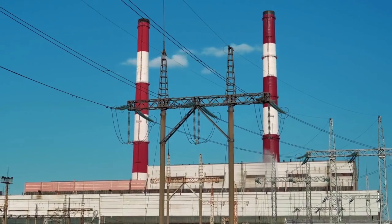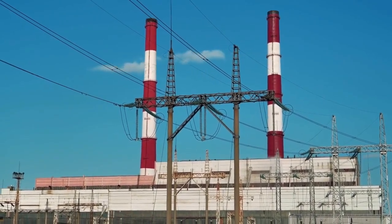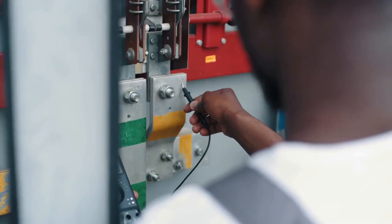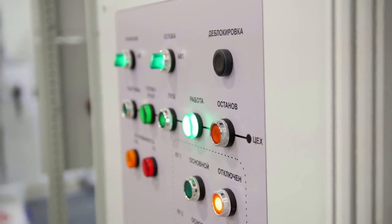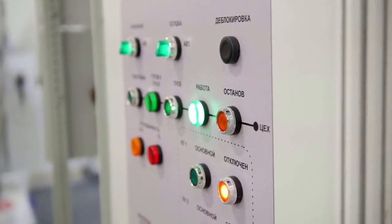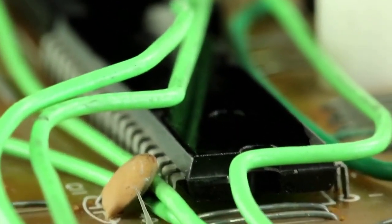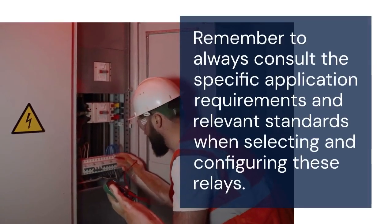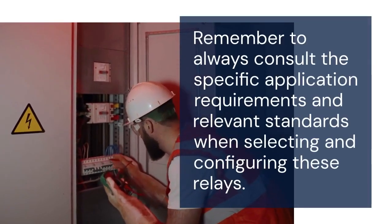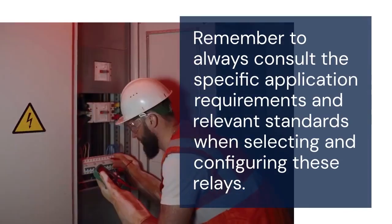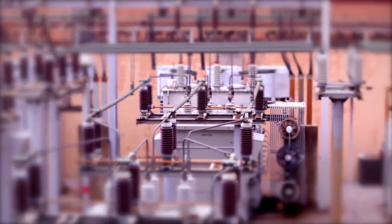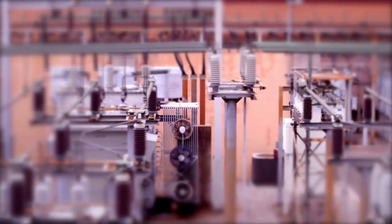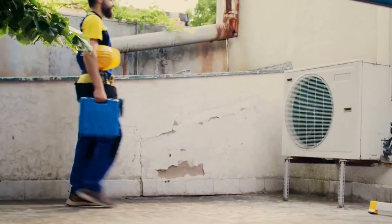To summarize, both 50-51N and 50-51G relays detect ground faults, but they achieve this through different methods. The 50-51G offers more direct and sensitive protection, making it the preferred choice for critical equipment. Remember to always consult the specific application requirements and relevant standards when selecting and configuring these relays. I hope this video has clarified the difference between 50-51N and 50-51G relays. Thank you for watching.